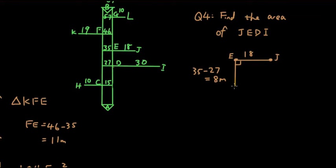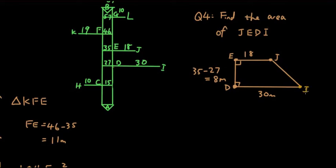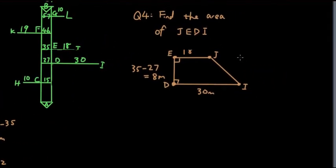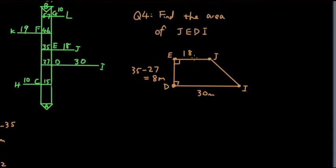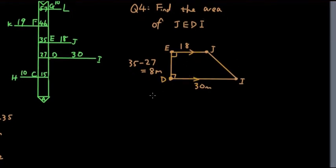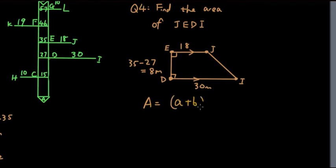From D to I is again at right angles and is 30 meters. We have a trapezium — a shape with one pair of parallel sides. The area of a trapezium is: area equals (a plus b) times h divided by 2.